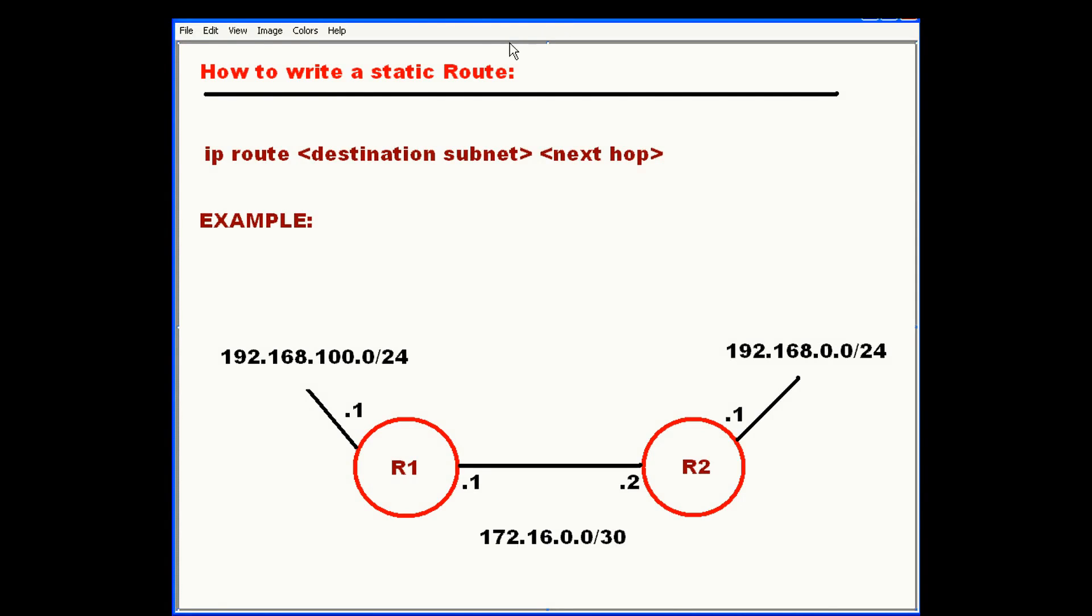So first off, let's define what a static route actually is. A static route is a network configuration that you as an administrator will add to a router or a firewall in order to manually update the device's routing table.